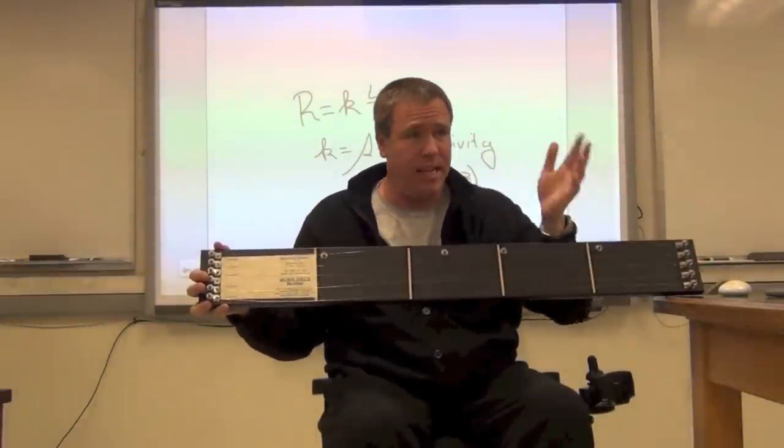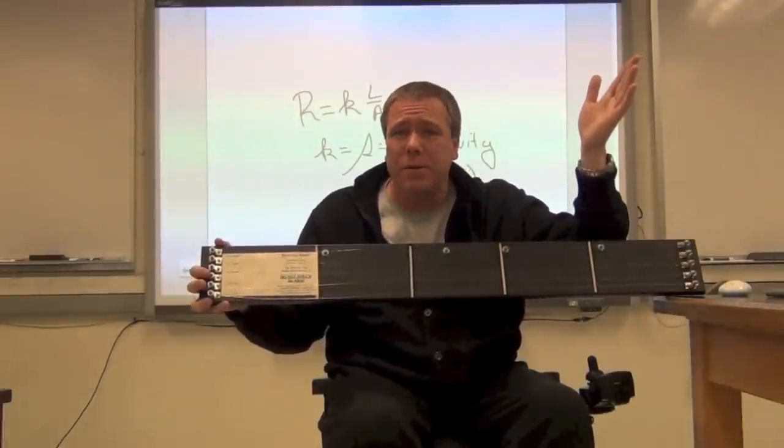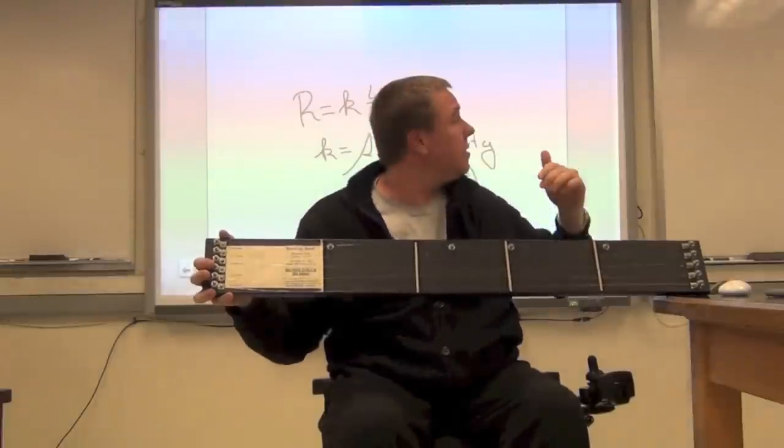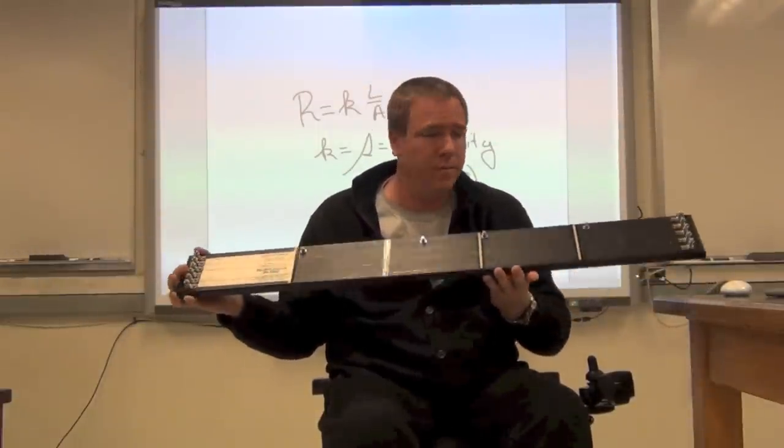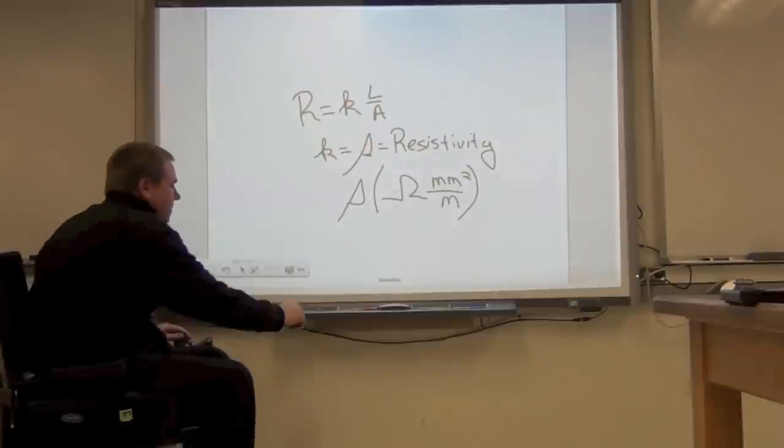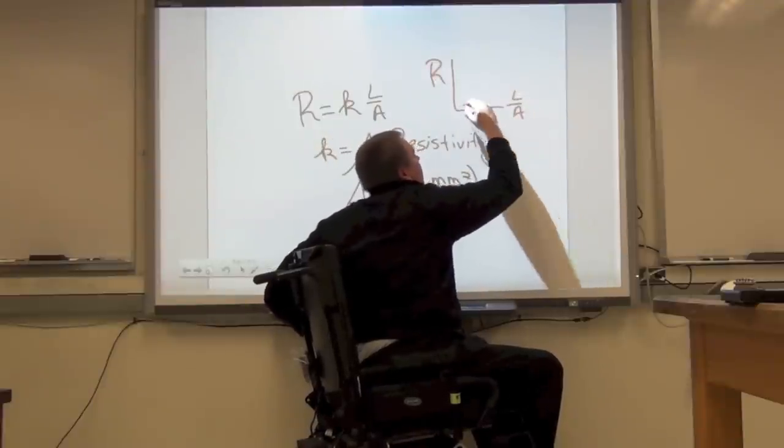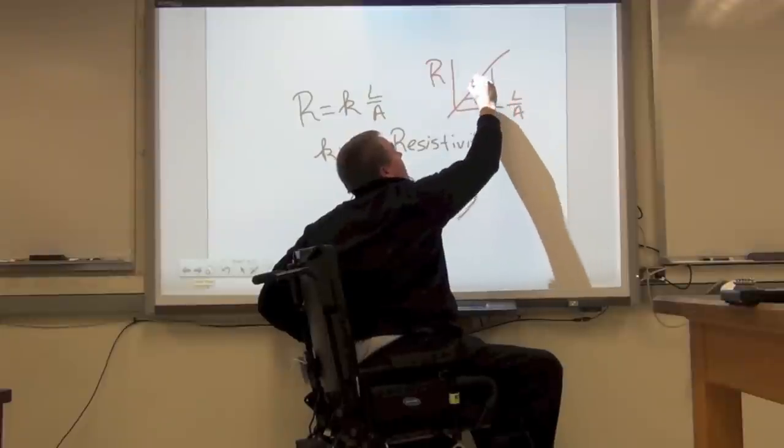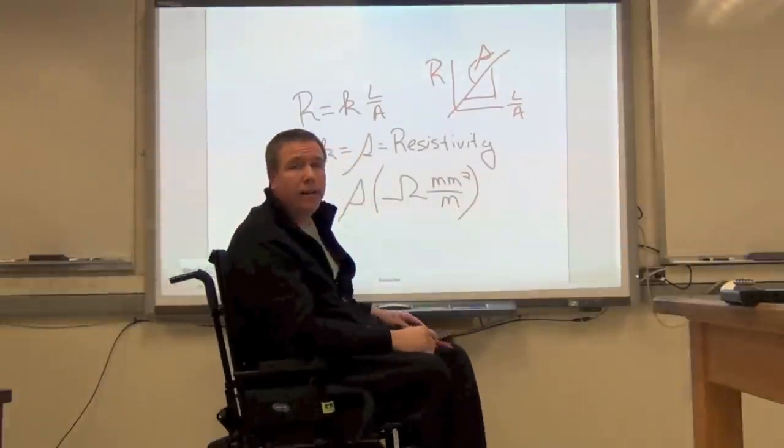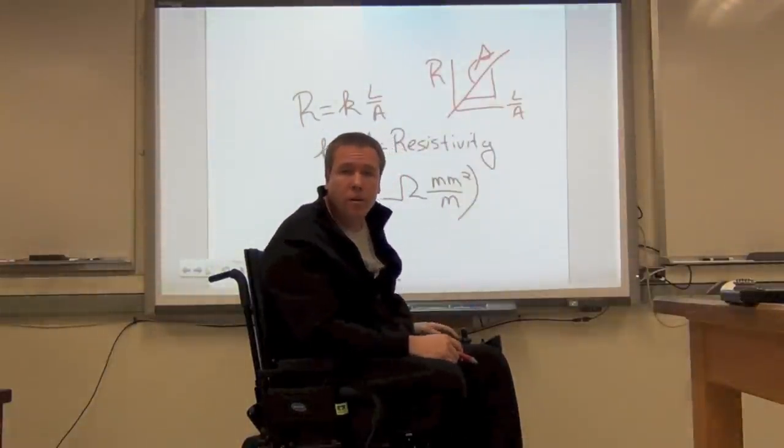You're going to plot that, R versus A, and you're going to see, hopefully, a one over relationship, one over x. And you're going to write on there, this does not appear to be proportional. It looks like an inverse proportional. And then you're going to plot R versus L over A to get this relationship to find rho. If we plot R versus L over A, that slope should be the resistivity rho. And it has units of ohms, millimeters squared per meter for the slope, for rho.